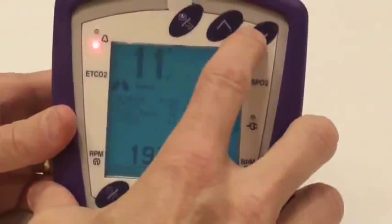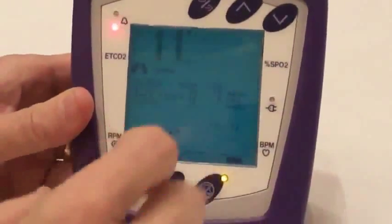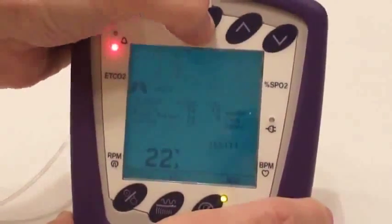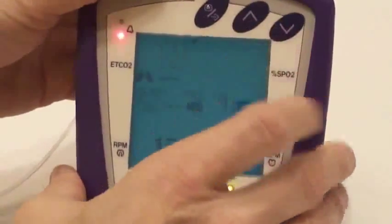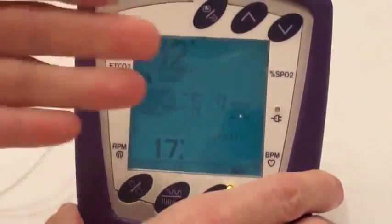If we wanted to do respirations per minute we would just go right down here to the next respiration rates per minute. Right now we've got the alarm set at 44. If we want to change that we just press the menu button. Using the arrow key up or down we can adjust it. Then once it's adjusted press the menu button again and it's locked in.